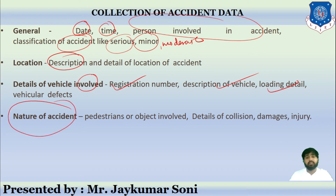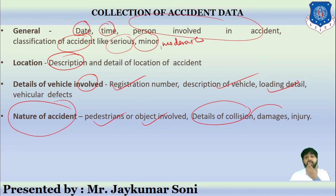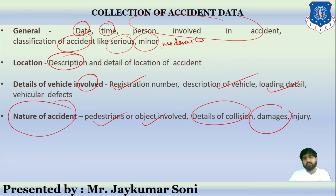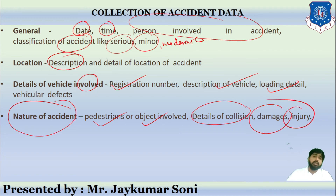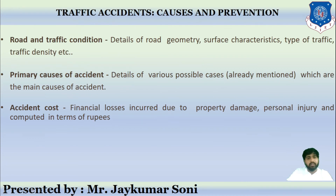We collect the nature of the accident: whether pedestrians or objects are involved, whether pedestrians were injured, the types of collision that took place, and what damages the road sustained. If an accident takes place, certain parts of the median get damaged, crash barriers get damaged, and the road itself gets damaged. We also collect details of injuries sustained.